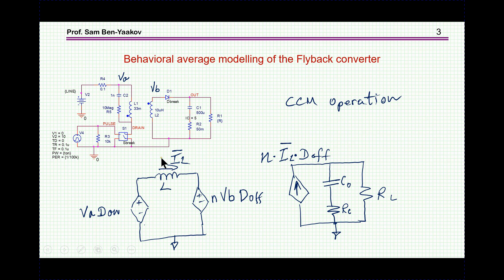Now, we can use the concept of behavioral average modeling to build an average model of this circuit, and as a matter of fact, of any PWM converter. So this is just an example. You can do it exactly the same way for buck, for boost, or forward, or any PWM-based converter. So I'm starting here with the inductor. I can use the primary or secondary that is reflected to the primary or reflected to the secondary. I'm just using here the primary.